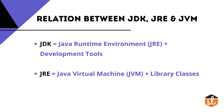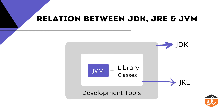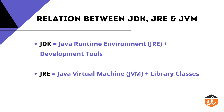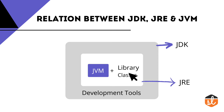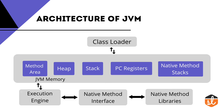JVM is a part of both JDK as well as JRE. Now see this pictorial representation that depicts the relationship among JDK, JRE, and JVM. The outer box represents JDK, which contains JRE, JVM, and development tools. This outer box contains the inner box which is JRE and development tools. The JRE contains JVM and library classes. This is a complete representation of JDK, JRE, and JVM.